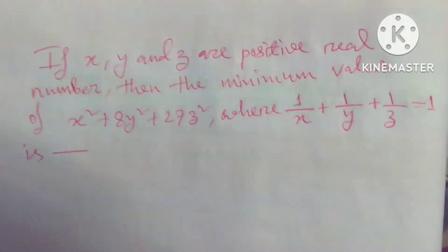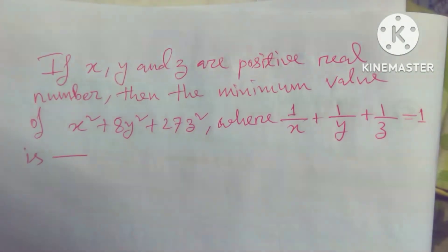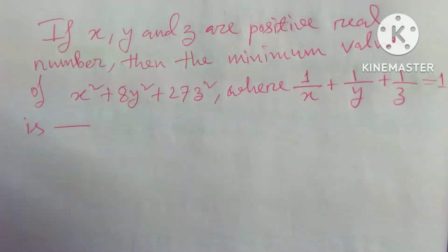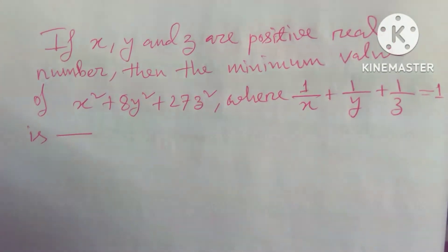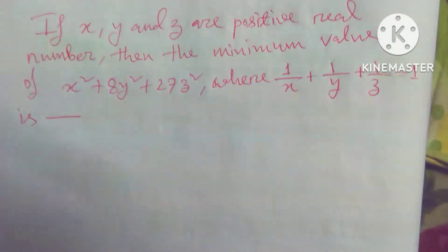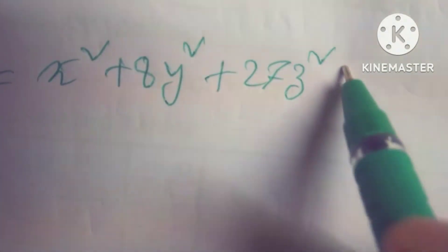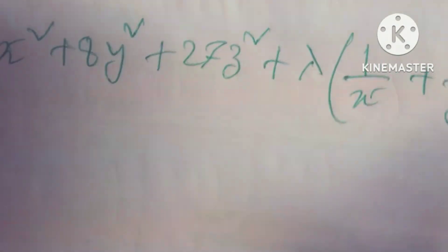Hello dear friends, welcome to my channel. Today's discussion is a maximum-minimum problem. If x, y, and z are positive real numbers, find the minimum value of x squared plus 8y squared plus 27z squared, given that 1/x plus 1/y plus 1/z equals 1. Let f equal x squared plus 8y squared plus 27z squared plus lambda times (1/x plus 1/y plus 1/z minus 1).